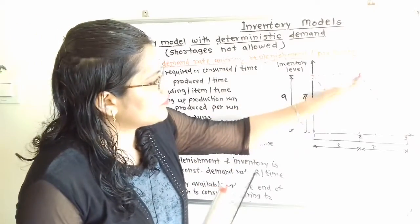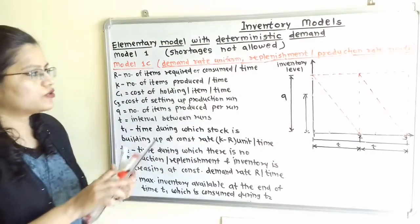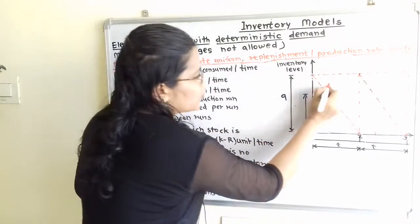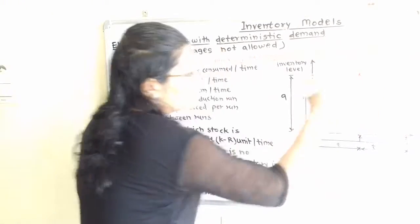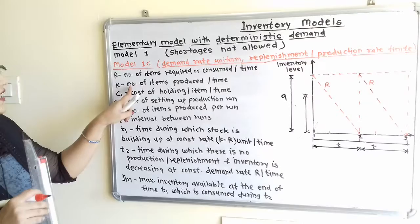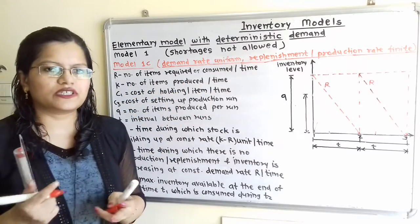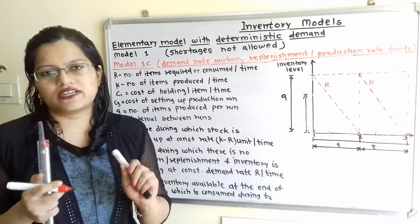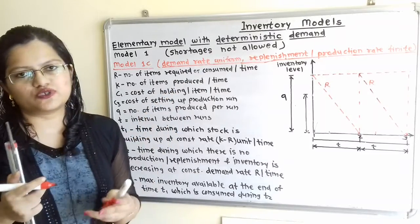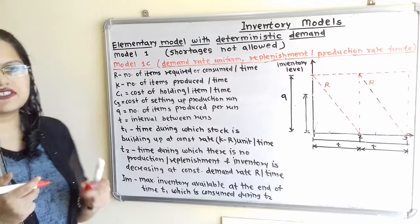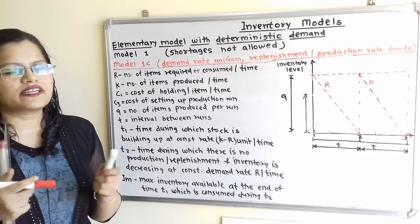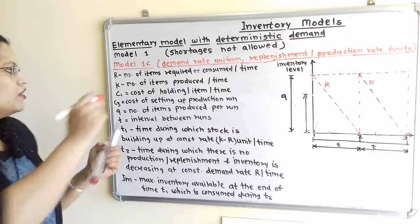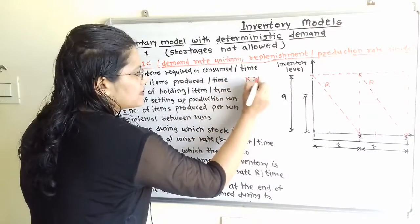The Demand Rate is uniform, so the slopes are the same — denoted R. K is the number of items produced per unit time, i.e., the Production Rate, while R is the Consumption Rate. Production rate K is always greater than consumption rate R, so K > R.